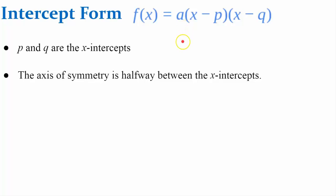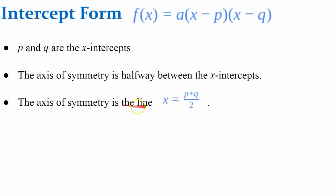The axis of symmetry is halfway between your x-intercepts. Therefore, you can find the axis of symmetry using this formula: add your x-intercepts and divide by 2, and this will be the equation of your vertical line that is your axis of symmetry.